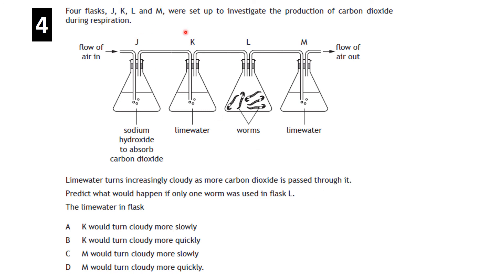Question: four flasks investigate CO₂ production during respiration — lime water turns cloudy as CO₂ passes through. Predict what would happen if only one worm was used in flask L. Flask M would turn cloudy more slowly, because with fewer worms there's less respiration, less CO₂ produced, and consequently the lime water turns cloudy more slowly.